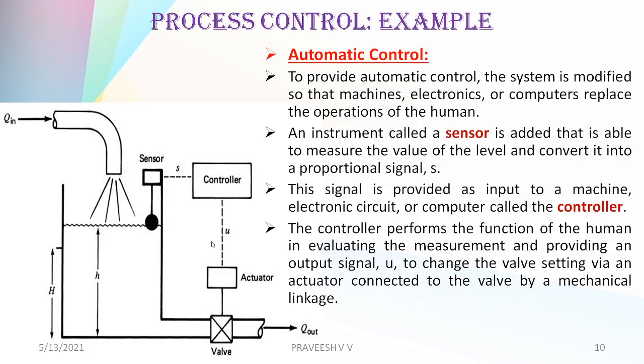The controller produces an output signal U, which is fed to an actuator to change the valve setting via an actuator connected to the valve by a mechanical linkage.